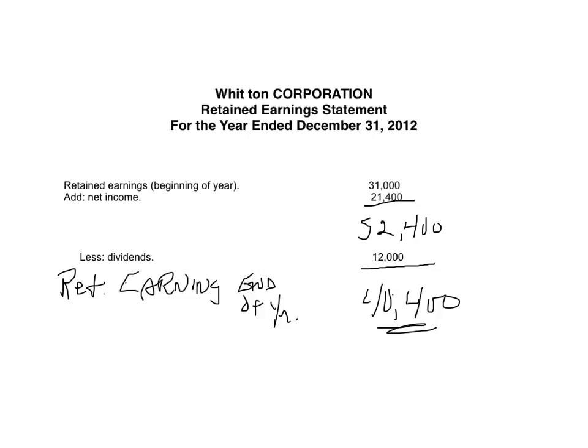This $40,400 will go to the shareholders' equity section of the balance sheet, which we do next. Remember, it's a classified balance sheet. The heading: Witten Corporation Balance Sheet as at December 31, 2012. This is a snapshot of the assets the business has, the people it owes, and the investment the shareholders have in the company as at the end of business December 31, 2012. We start off with assets — current assets first.